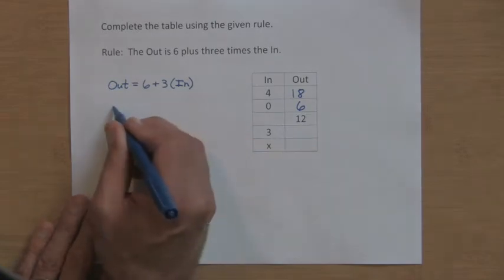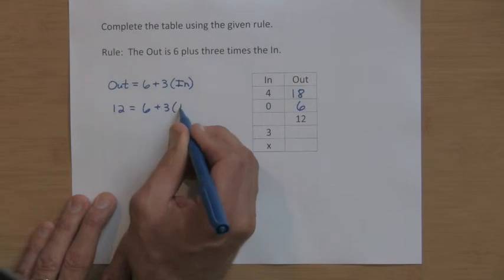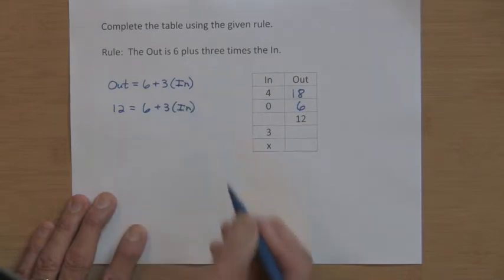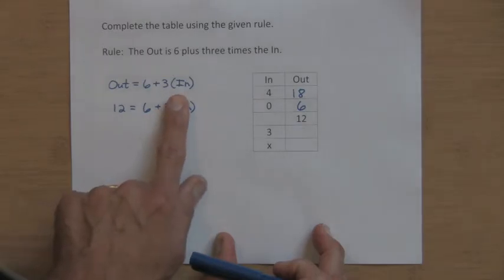The out is 12. So think of it this way. If 12 is the out, that has to be six plus three times the in. And the only way you can make 12, if you're adding six plus what's under my finger, this three times the in has to also be worth six, because six plus six makes 12.